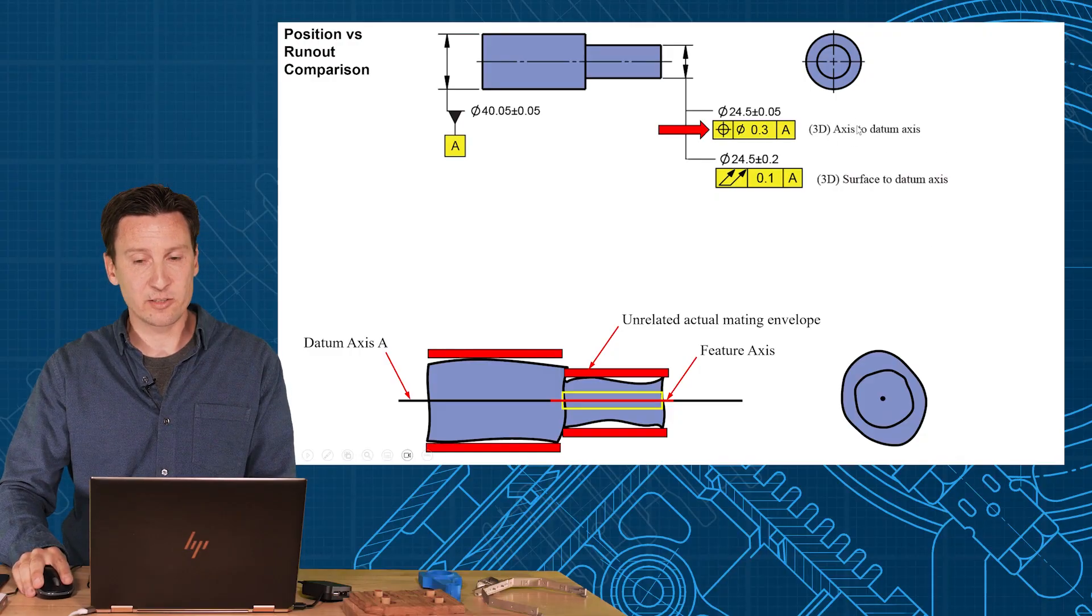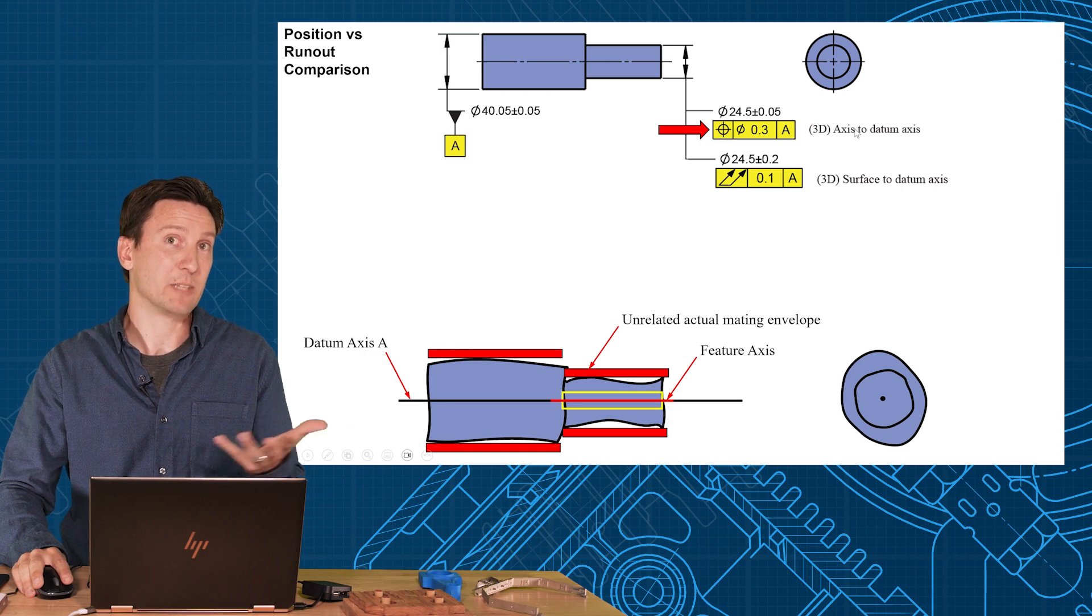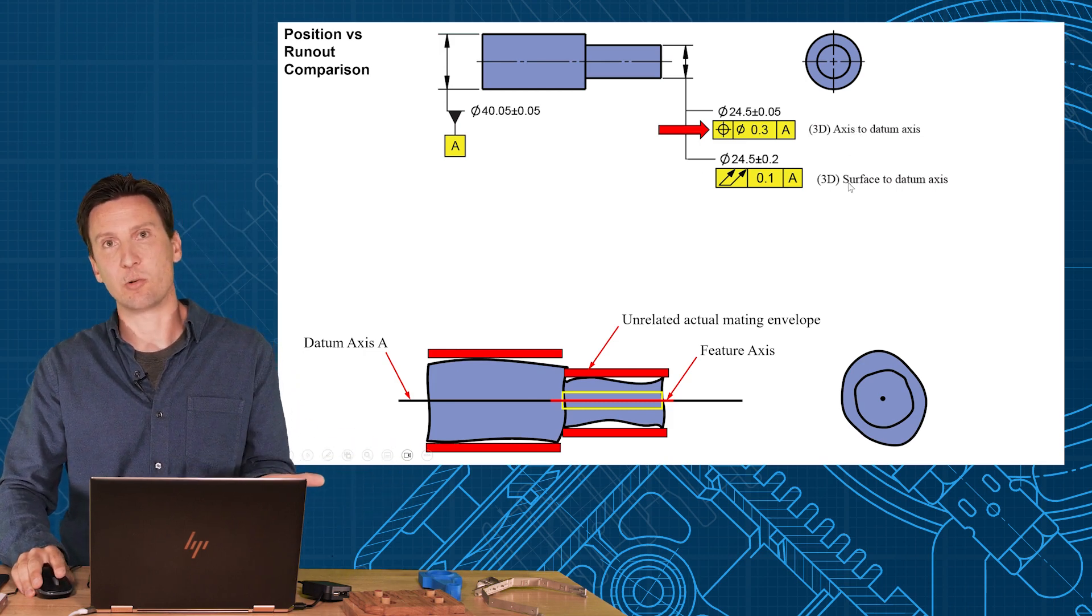Position is controlling the axis of the unrelated actual mating envelope, the axis of the high points, versus runout which is controlling the surface.